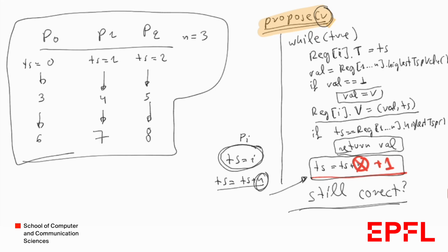So is this uniqueness of timestamps necessary for correctness? Indeed, plus n was needed for correctness. With plus 1, the algorithm won't work. Let's present an example of why the algorithm won't work if different processes could have the same timestamp.